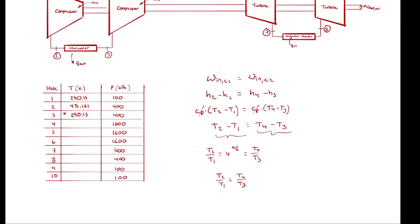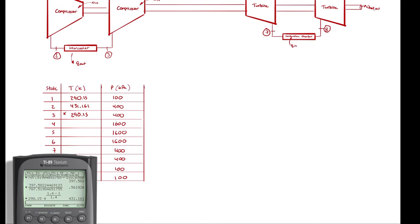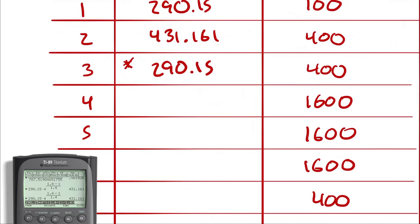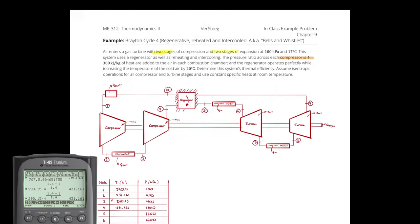Analyzing from 3 to 4 in the same way as 1 to 2 using isentropic ideal gas equations: T4/T3 = 4^((k−1)/k). So T4 = 290.15 × 4^(0.4/1.4) = 431.161 K, the same as T2. We have now made it through our compression stages — two-stage compression as explicitly stated in the problem.